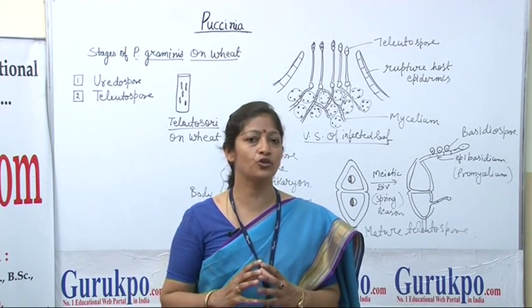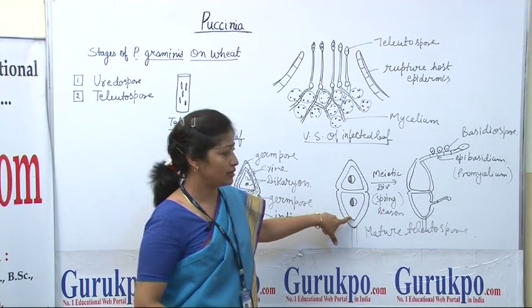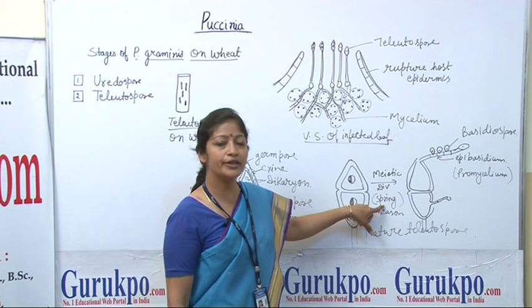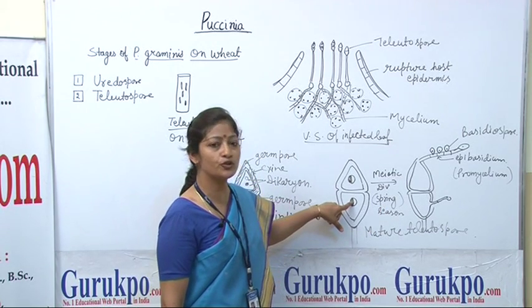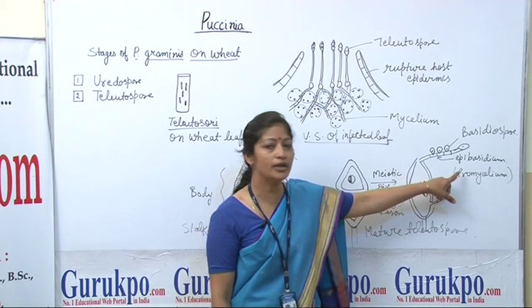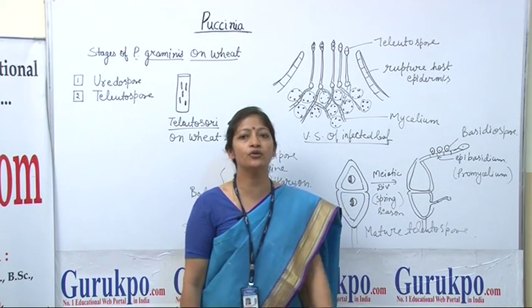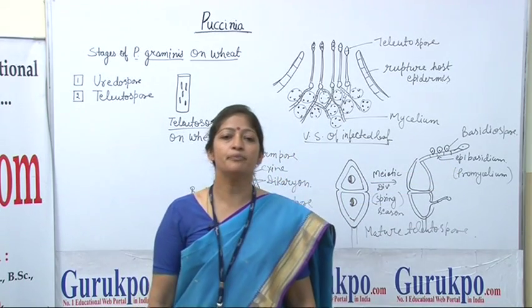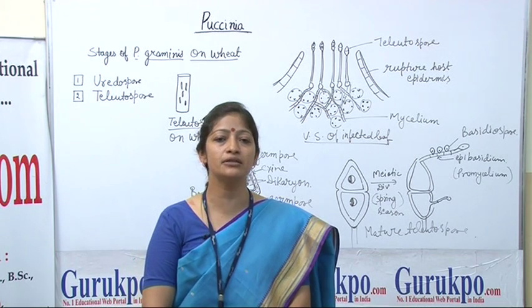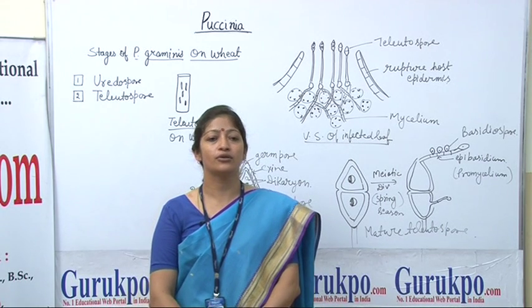At maturity, these dikaryons fuse together. Under favourable conditions during spring, these teliospores germinate and produce pro-mycelium, called the epibasidium, and it produces basidiospores. These basidiospores have a short life and are present in the soil, and in fact infect the next host.